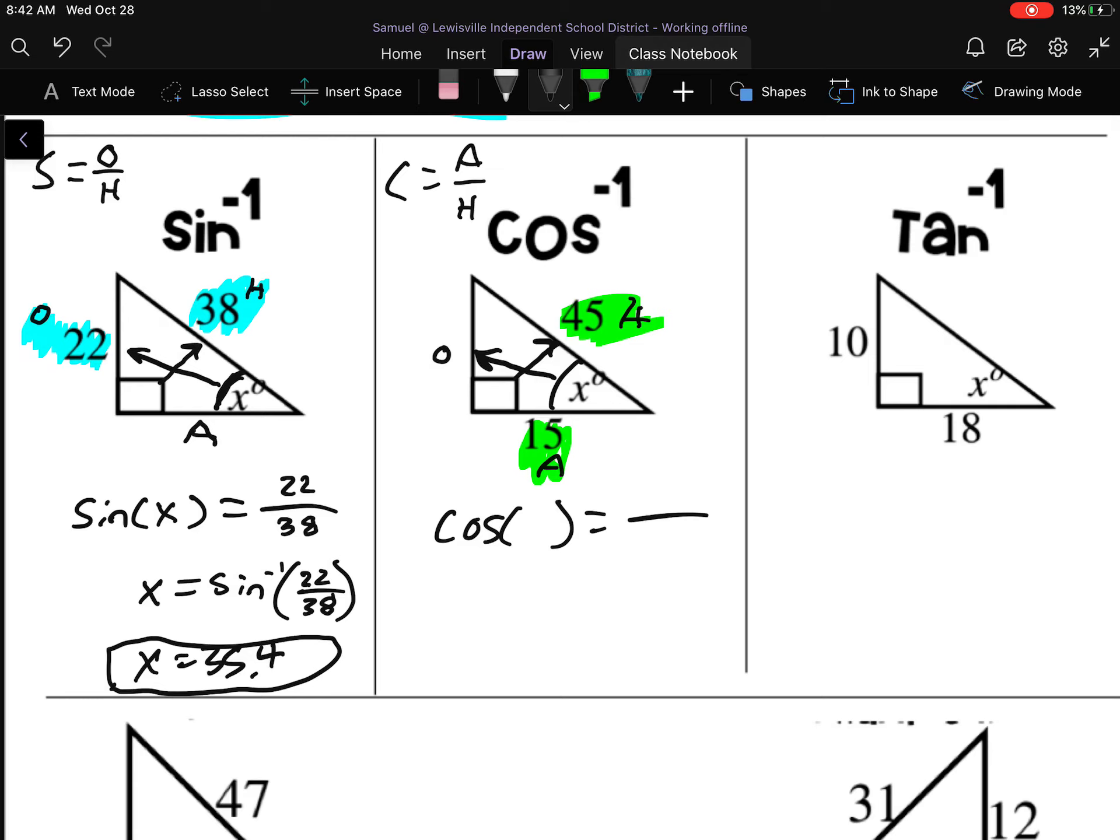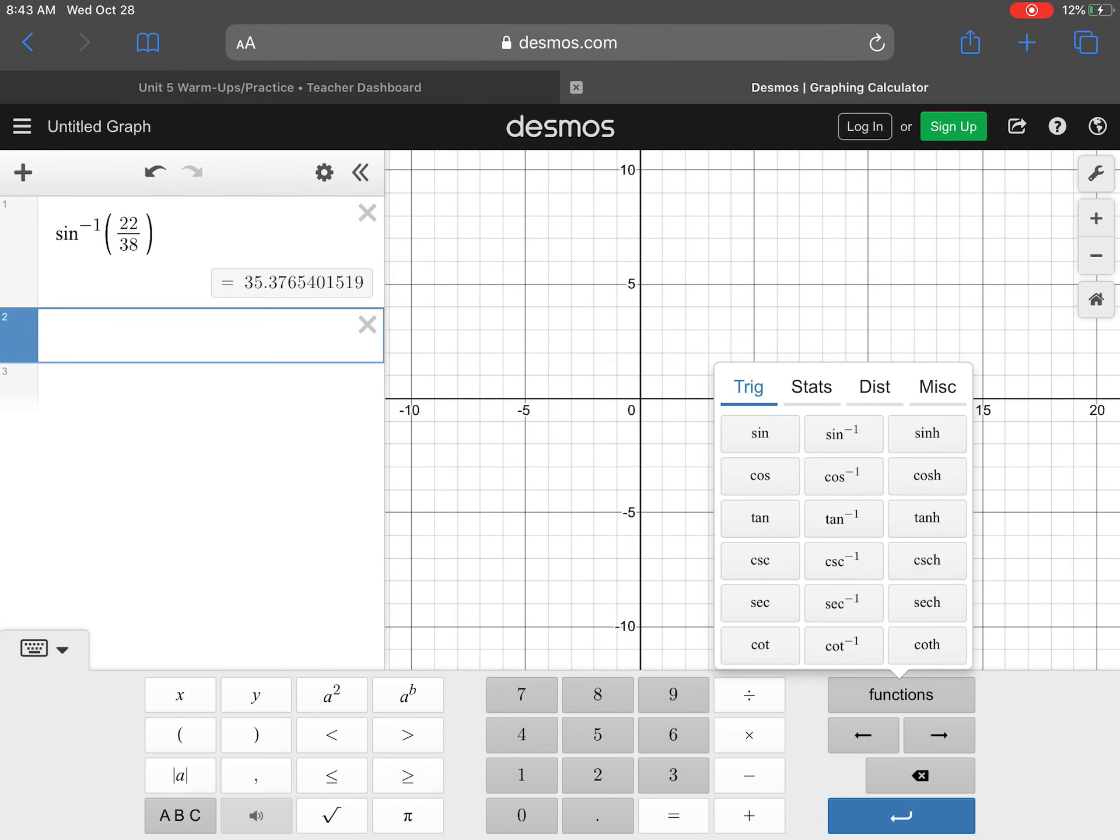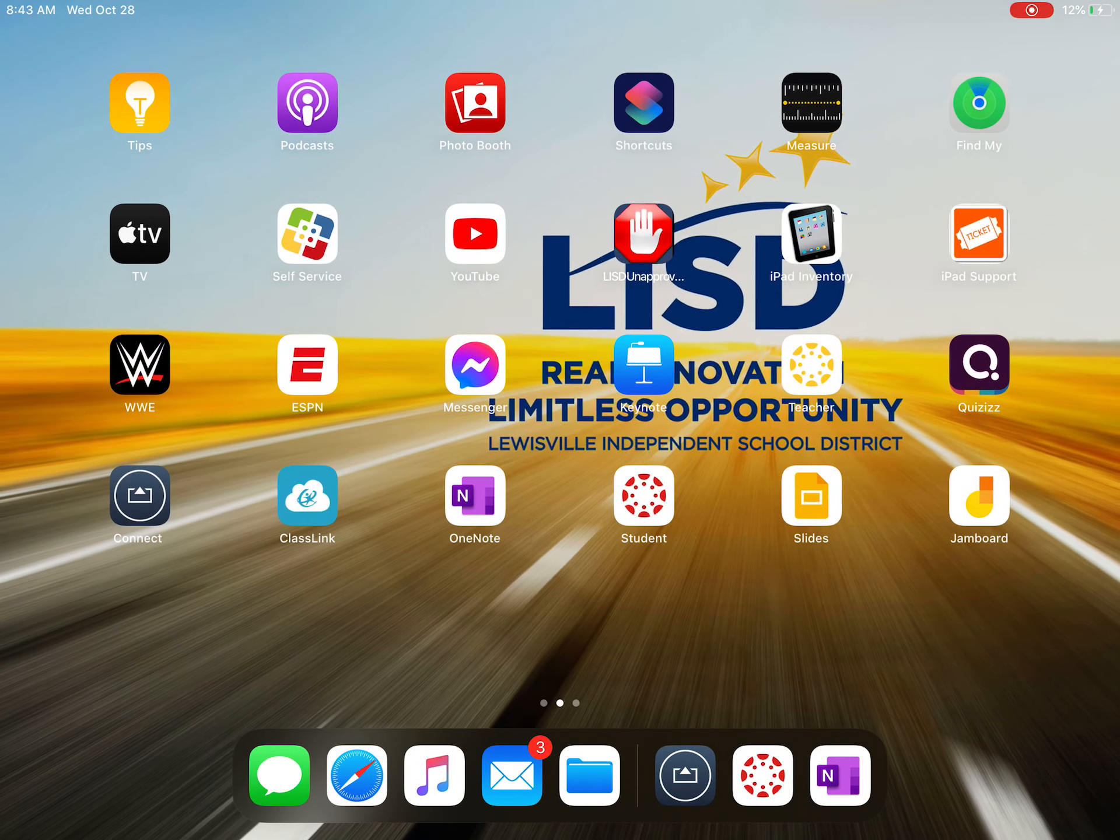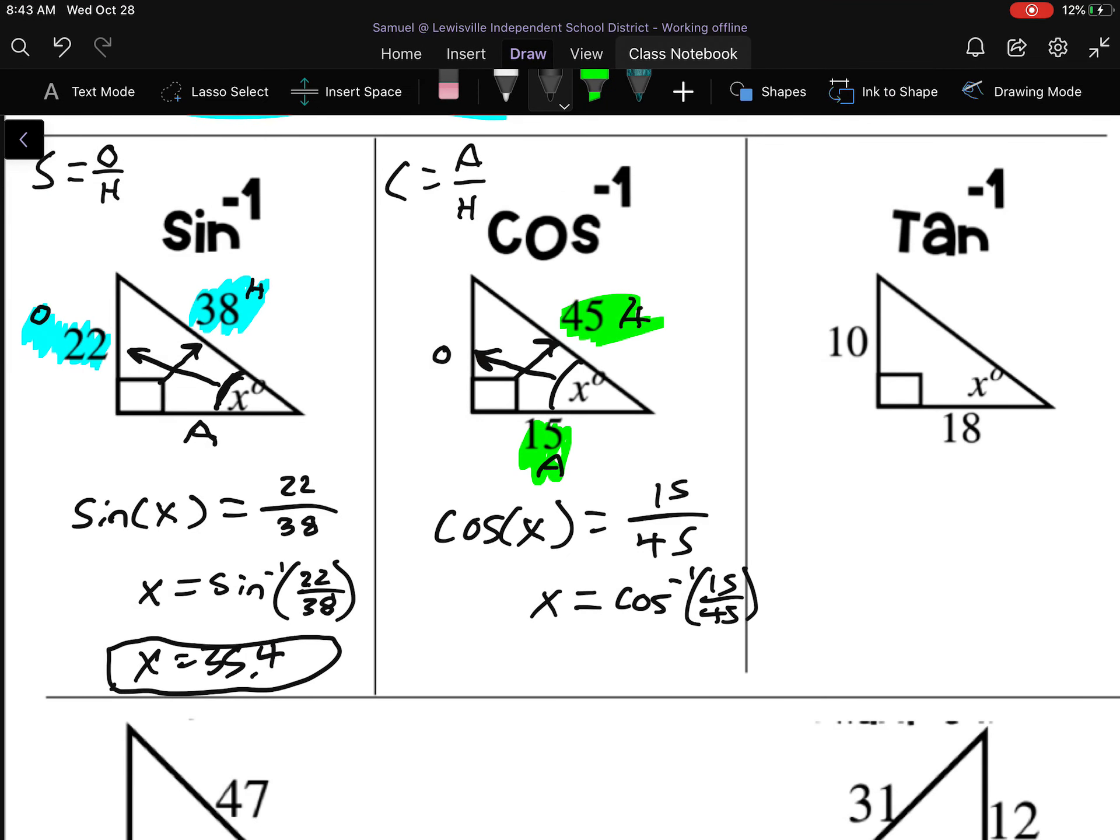So how do we write this? Inside the parentheses always goes your angle, which in this case is X. And cosine is A over H, 15 over 45. So my X is inside the parentheses. So to get it out of there, I will do inverse. If it's inside, inverse. And this is 15 over 45. Inverse cosine of 15 over 45. I'll hop back over to Desmos. Functions. Inverse cosine. 15 over 45. This looks like it is 70.5.